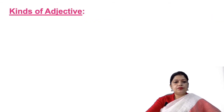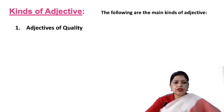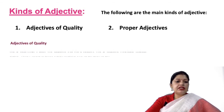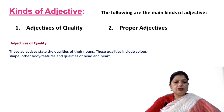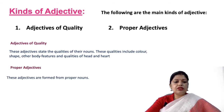Now, the kinds of adjectives. The following are the main kinds: adjectives of quality and proper adjectives. Adjectives of quality state the qualities of their nouns — these qualities include color, shape, other body features, and qualities of head and heart. Proper adjectives are formed from proper nouns.